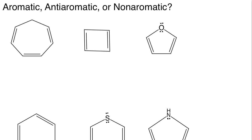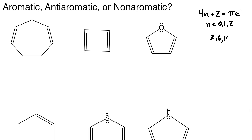Hückel's rule states that aromatic compounds have 4n + 2 pi electrons, where n must equal a whole integer — 0, 1, 2, etc. So any cyclic, flat, conjugated compound with 2, 6, 10, or 14 pi electrons would be considered aromatic.